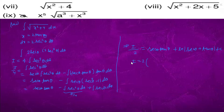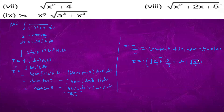So I = 2 · √(x²/4 + 1) · (x/2) + ln|√(x²/4 + 1) + x/2| + C, substituting back secθ and tanθ in terms of x.